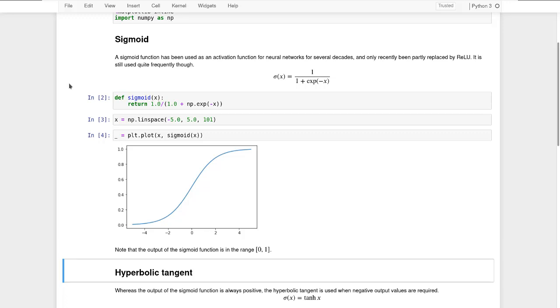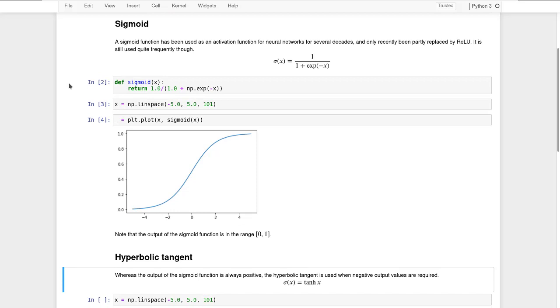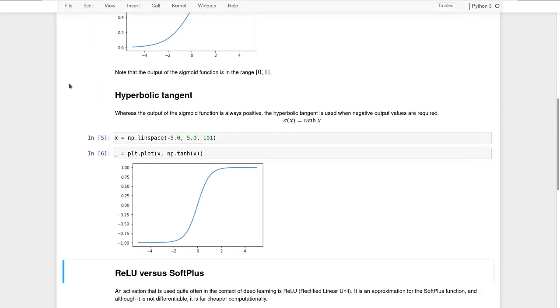Another function which is commonly used is the hyperbolic tangent. The advantage of that function is that it has outputs between minus 1 and 1, which in some cases may be more appropriate. So again, let's look at the function. We define the domain and we plot the function. And as you can see, for negative values, it goes to minus 1. At 0, it is 0. And for positive values, it tends to 1.